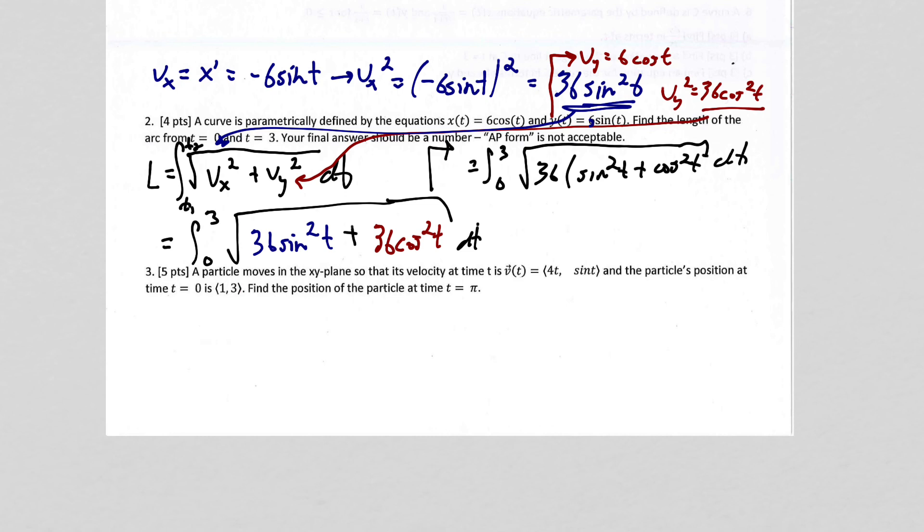And then this is where it simplifies a whole lot. Sine squared plus cosine squared is equal to 1. You should know that from algebra. So that whole piece just goes away because it turns to 1.